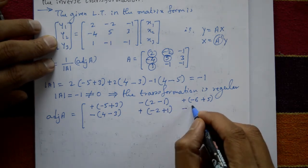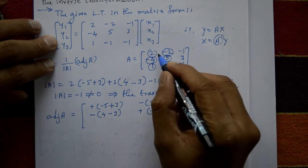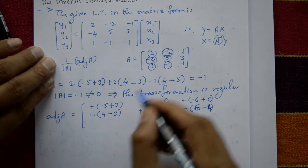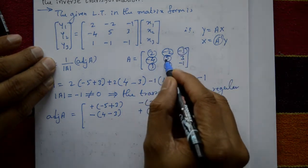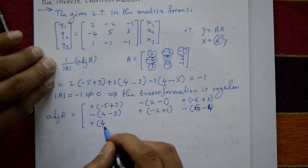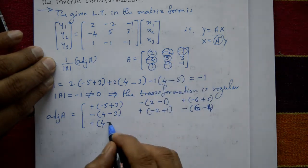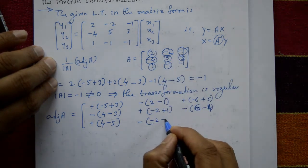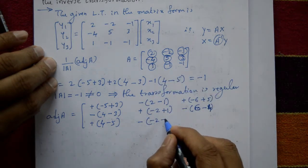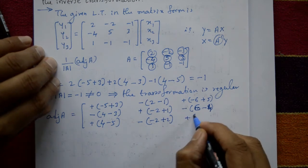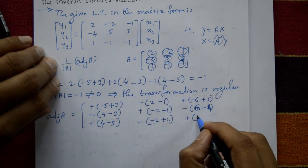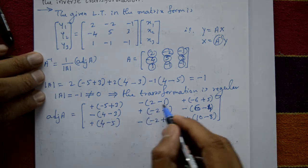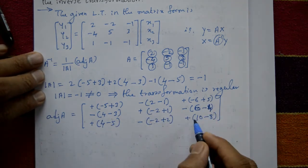Continuing the adjoint calculation: the cofactor involving 2×3=6 minus (-4)×(-1)=4 gives 2; next element (-4)×(-1)=4 and 1×5=5, giving -1; then 2×(-1)=-2 minus (-2)×1=-2, giving plus 2; and the last element 2×5=10 minus (-4)×(-2)=8, giving 2.